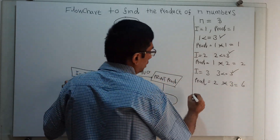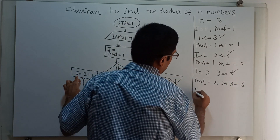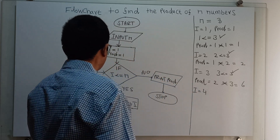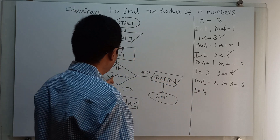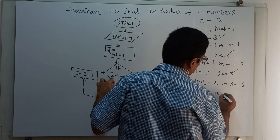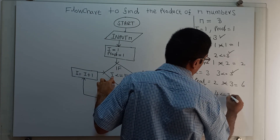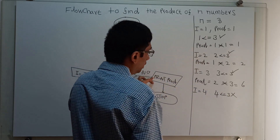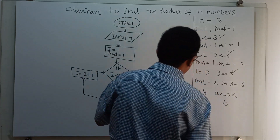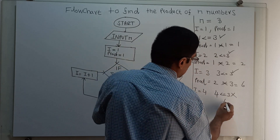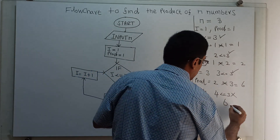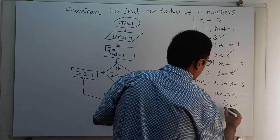Now i equal to i plus 1, so i equals 4. Let me check: i less than or equal to n — 4 less than or equal to 3 is false. So we come out and print the value: 6 as output. So 6 is the result.